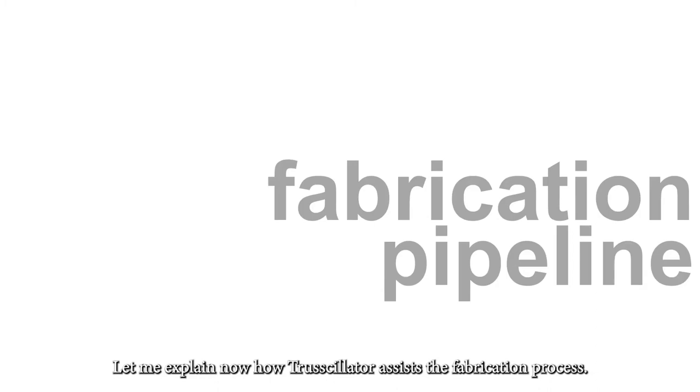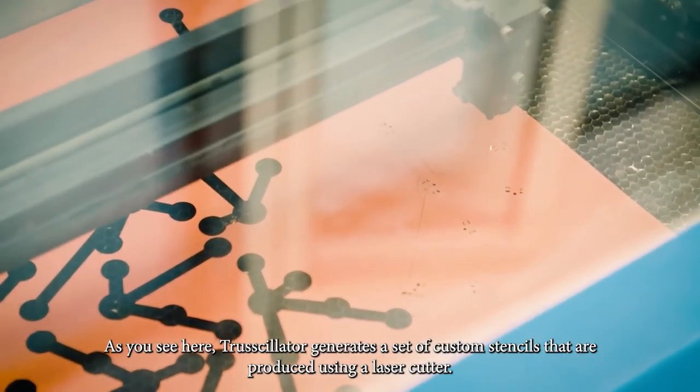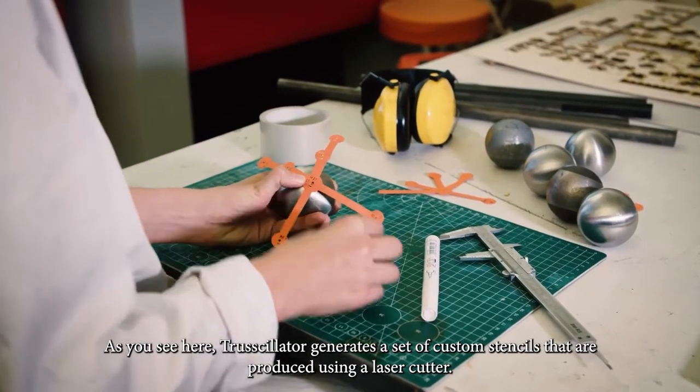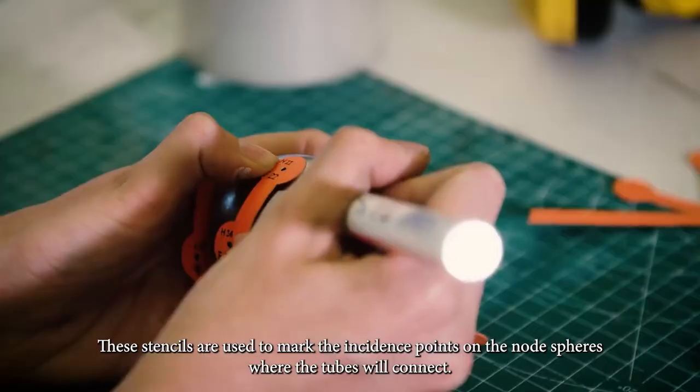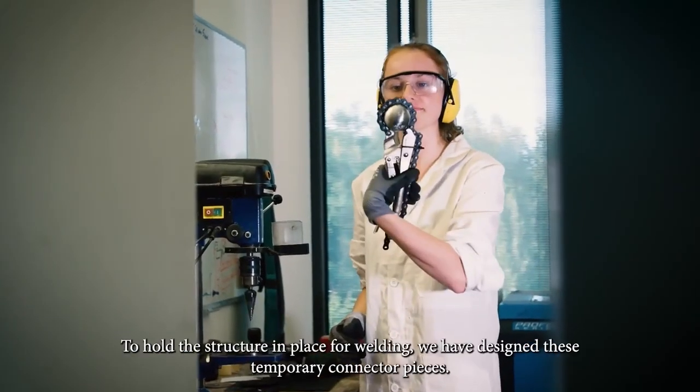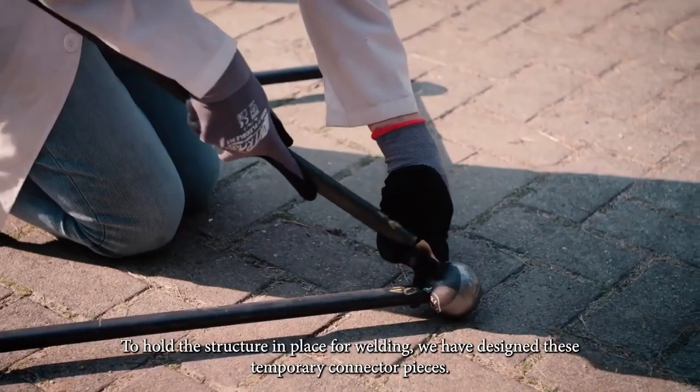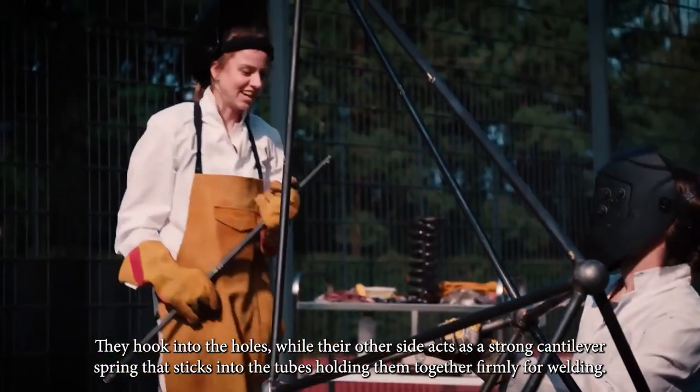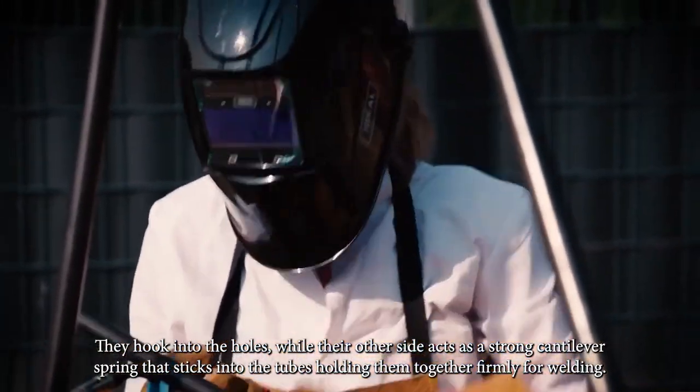Let me now explain how Trussillator assists the fabrication process. As you see here, Trussillator generates a set of custom stencils that are produced using a laser cutter. These stencils are then used to mark the incidence points on the node spheres where the tubes will connect. To hold the structure in place for welding, we have designed these temporary connector pieces. They hook into the holes while their other side act as a strong cantilever spring that sticks into the tubes, holding them together for welding.